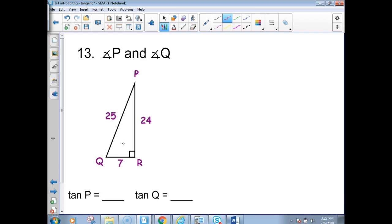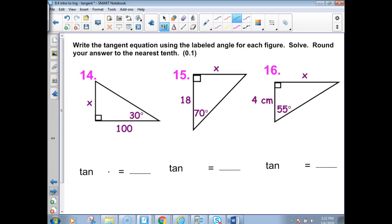This one, nothing to do with it. If we want to do the tangent of p, we're going to stand here at angle p, and we're going to look out, and we're going to say, okay, 7 is opposite that, and adjacent, this one's the hypotenuse, don't use it, would be 24. And the tangent of q, if I'm standing over here and looking out, the opposite side's 24, the adjacent's 7. So these are reciprocals of one another when you come from the other angle. They've got to flip over. Write the tangent equation using the label figure angle for each figure, solve and round your answer to the nearest tenth.